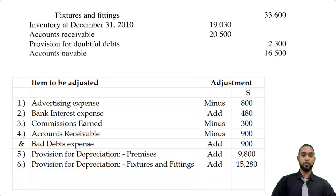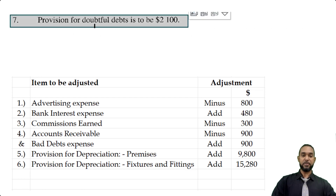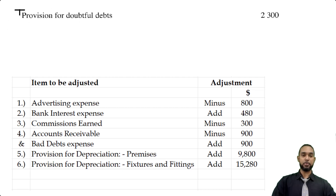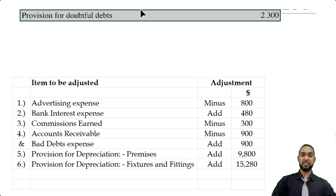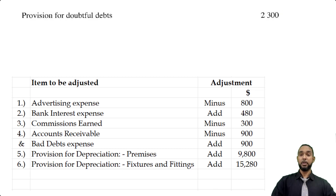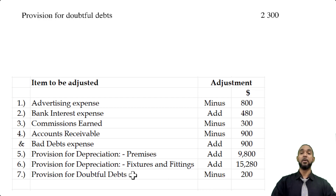Last but not least, the provision for doubtful debts is to be $2,100. Up in the trial balance, the provision for doubtful debts currently stands at $2,300. To go from $2,300 to $2,100 it has to go down, so the adjustment is a subtraction of $200 from the existing provision for doubtful debts. Okay, that's it for part A. Let's take a look at part B.